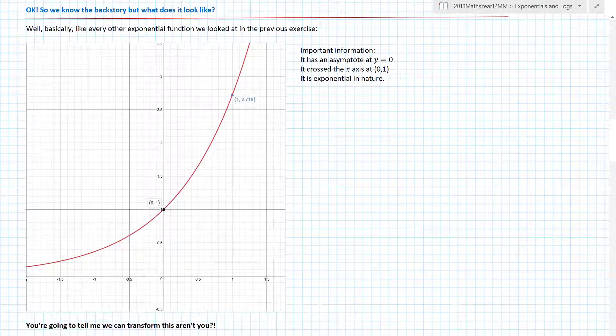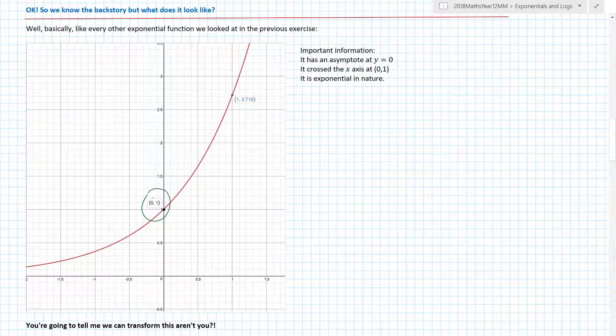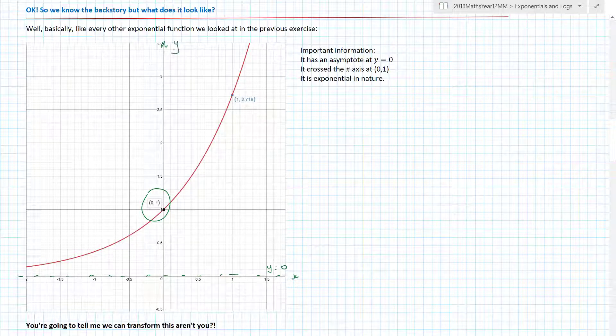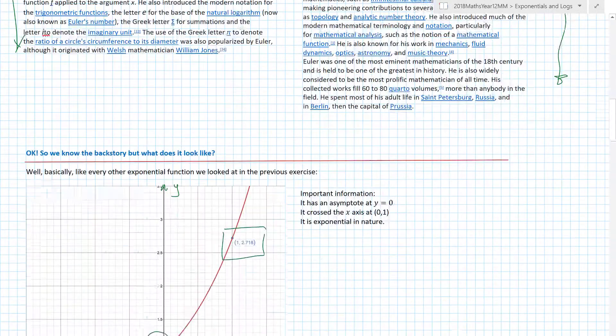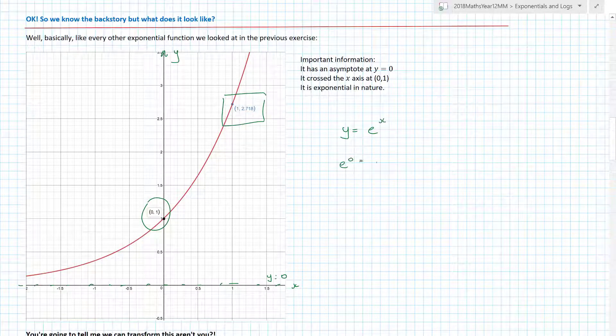So what does it actually look like? We've been to Euler's backstory. What does it look like? Well basically like every other exponential function to be honest with you. Looks pretty similar, yeah? Crosses through (0,1), has an asymptote here along the line y equals 0. There's x and there is my y value. This 1, 2.718 - remember Euler's constant 2.718. Where we have the function y equals e^x, then e^0 is 1. So when x equals 0, y equals 1, and when x equals 1 we get basically e.